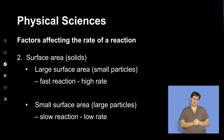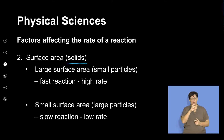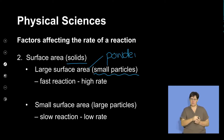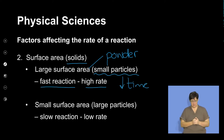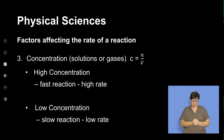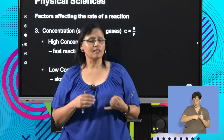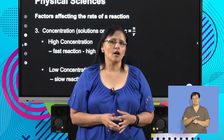The second factor is surface area. When we look at surface area, think in terms of solids. A large surface area means small particles — for example, powder. When we have a powdered surface, we have a fast reaction with a high rate in a very short time frame. A small surface area means large particles, like a piece of magnesium ribbon. A change in surface area — whether small or large — influences the rate of the reaction.